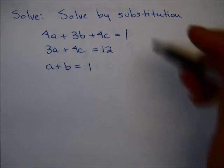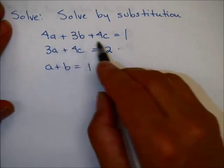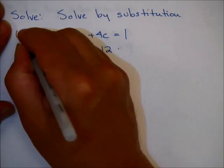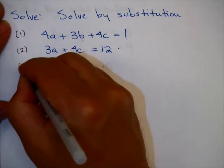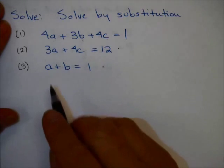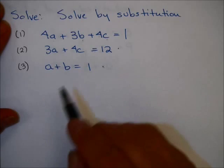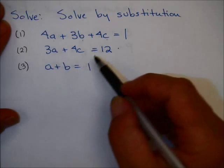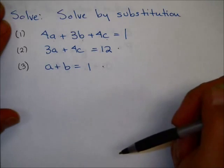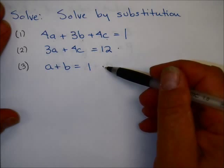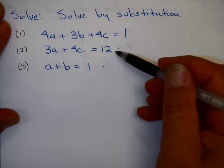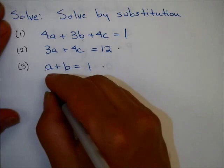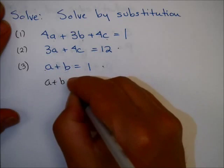Here's an example. Solve by substitution this system of three equations with three variables. Notice the variables here are A, B, and C, and I have three equations. I'll call them equation 1, equation 2, and equation 3. To solve by substitution, we are going to take one of the equations and solve for one of the variables. Which of these equations would be easiest to use? I claim equation 3, because it only has two variables, like equation 2. However, these variables have a coefficient of one, so it would be very easy to take equation 3 and solve for A.